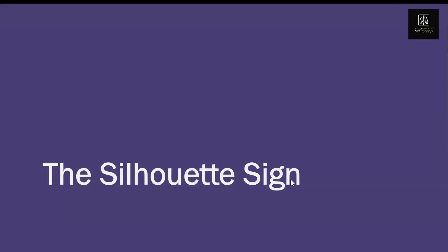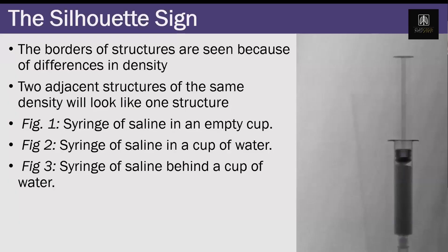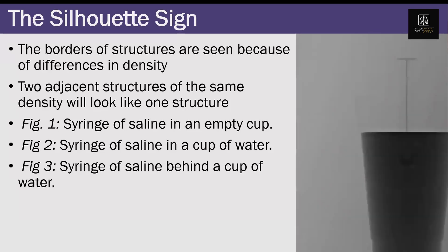Let's talk about the silhouette sign — this is an important principle. I've taken an X-ray of a syringe inside a cup. The cup is empty with nothing inside, and the syringe has saline inside it. This is like a model of the chest because the chest is filled with air just like this cup, and the syringe in the middle is like the heart, which is of water density.